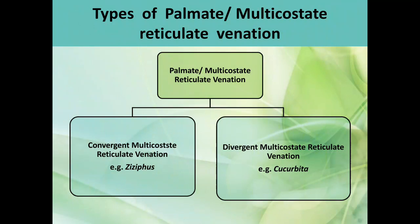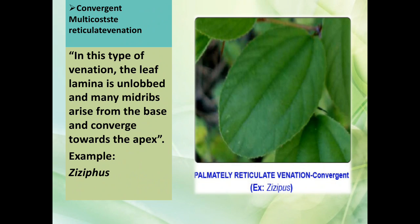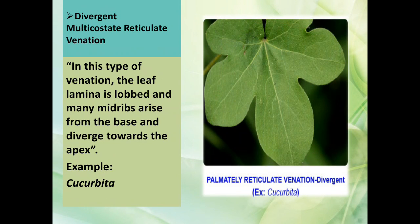Types of palmate multicostate reticulate venation: there are two types — convergent multicostate and divergent multicostate reticulate venation. In convergent multicostate reticulate venation, the leaf lamina is lobed and many midribs arise from the base and converge towards the apex. In divergent multicostate reticulate venation, the leaf lamina is lobed and many midribs arise from the base and diverge towards the apex, for example in Cucurbita.